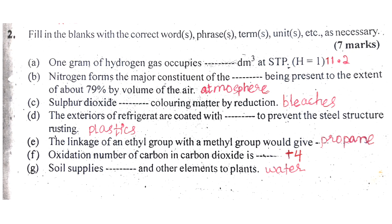Number B: Nitrogen forms the major constituent of the atmosphere, being present to the extent of about 79% by volume of air. This is the atmosphere.